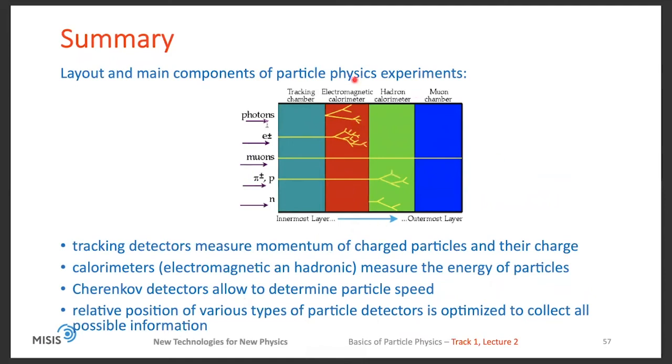As a summary, I show again layout and main components of particle physics experiments, which have first tracking chambers allowing to see charged particles like electrons, muons, charged hadrons. Electromagnetic calorimeter, which allows to measure energy of the photon or electron. Hadron calorimeter, which allows to measure energy of charged or neutral hadrons. And muon chambers, which detect anything not absorbed in the electromagnetic or hadron calorimeters. Such particles are muons basically. What is not shown here is Cherenkov detectors, which allow to determine particle speed or its type. The relative position of various types of particle detectors is typically optimized to collect all the possible information about particles produced in the initial collision.